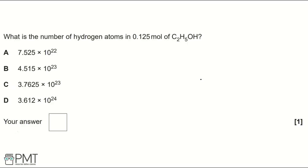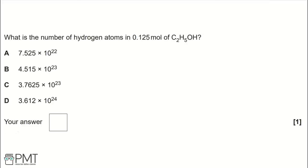What is the number of hydrogen atoms in 0.125 moles of C₂H₅OH? There are 5 H atoms plus 1 H from the OH group, giving a total of 6. So we multiply 0.125 by 6, which gives us 0.75 moles of hydrogen atoms.